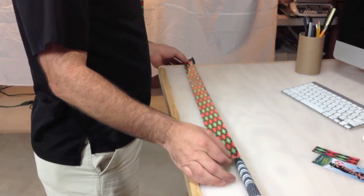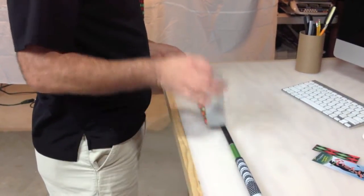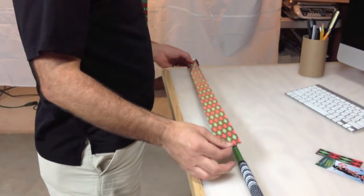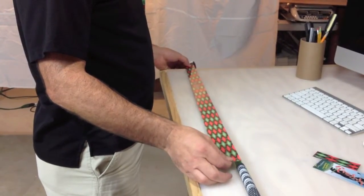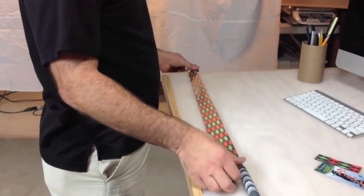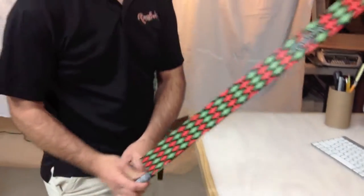If you get it on crooked or you have a wrinkle in it, just lift it back up and start again. Now it's stuck, so I'm going to remove it from the table.